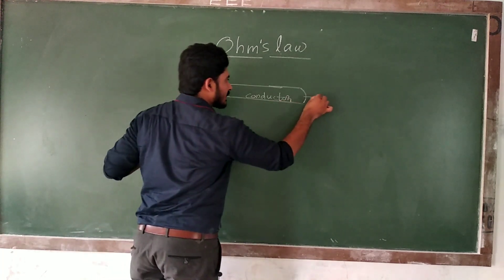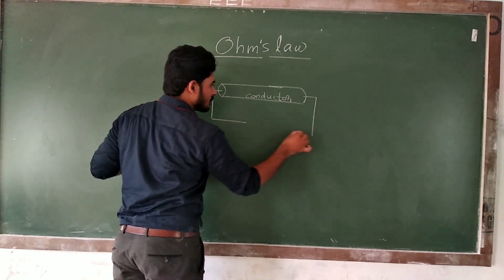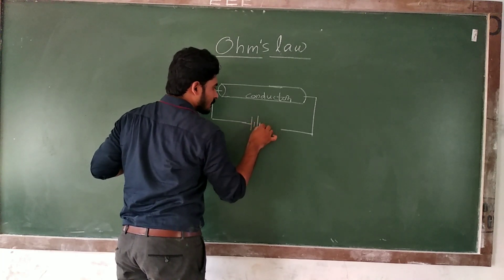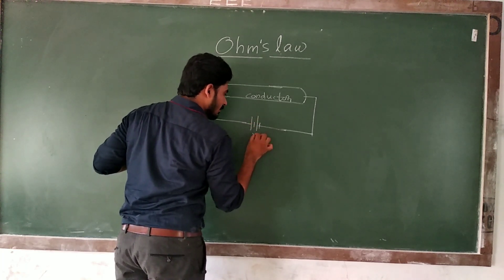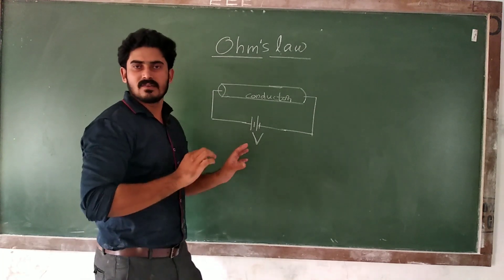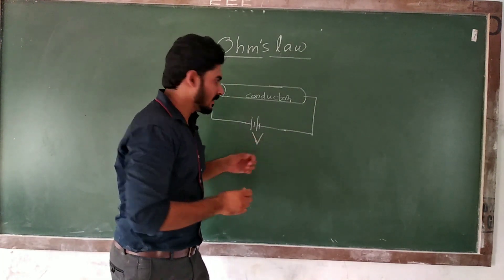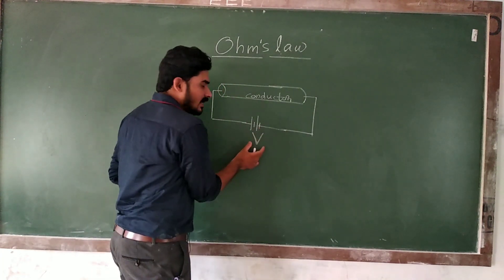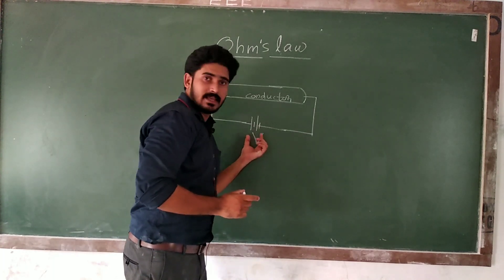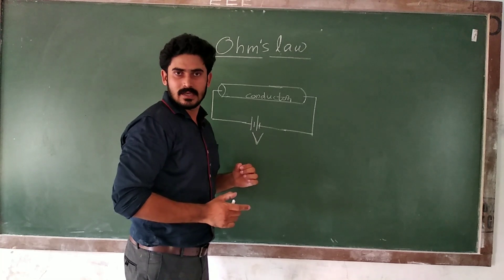I am connecting a battery to the conductor. This is a battery. You can call the battery V. V is the name of the voltage. We are supplying a voltage V to this conductor.